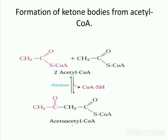Ketone bodies are formed in the liver and exported to other organs as fuel. The first step in the formation of acetoacetate is an enzymatic condensation of two molecules of acetyl-CoA, catalyzed by the enzyme thiolase. This is simply the reverse of the last step of beta-oxidation — the conversion of acetoacetyl-CoA into acetyl-CoA.